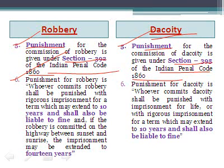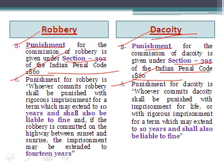On the other hand, punishment for dacoity is given under Section 395 of the Indian Penal Code. Whoever commits dacoity shall be punished with imprisonment for life, or with rigorous imprisonment for a term which may extend to 10 years, and shall also be liable to fine.